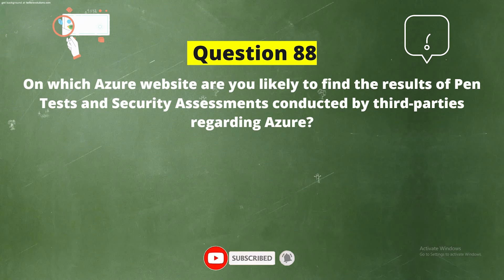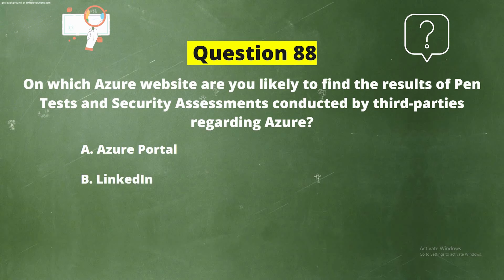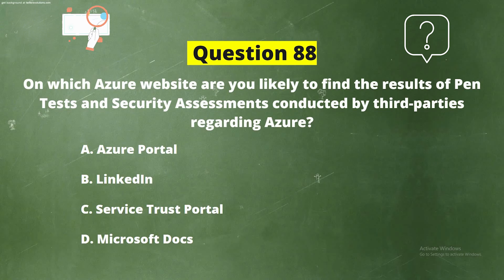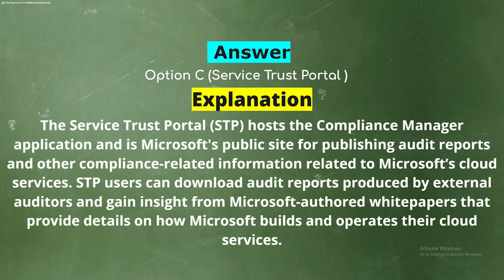Question 88: On which Azure website are you likely to find the results of penetration tests and security assessments conducted by third parties regarding Azure? Options: A) Azure Portal, B) LinkedIn, C) Service Trust Portal, D) Microsoft Docs. The correct answer is option C, Service Trust Portal. The Service Trust Portal hosts the Compliance Manager application and is Microsoft's public site for publishing audit reports and other compliance-related information related to Microsoft's cloud services.